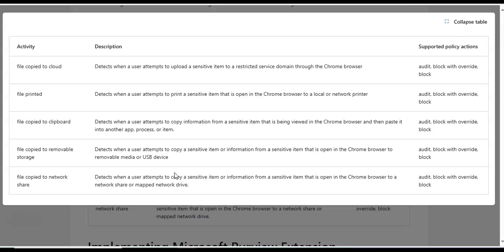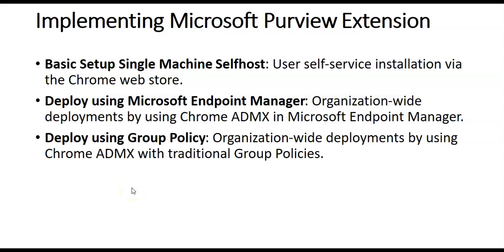Now we'll see the steps and options for installing the Microsoft Purview extension for Google Chrome. The implementation options are: first, basic setup single machine self-host — a self-service installation via the Chrome web store; second, deploy using Microsoft Endpoint Manager — an organization-wide deployment using Chrome ADMX in Microsoft Endpoint Manager; and third, via Group Policy — also an organization-wide deployment using Chrome ADMX with traditional group policies.